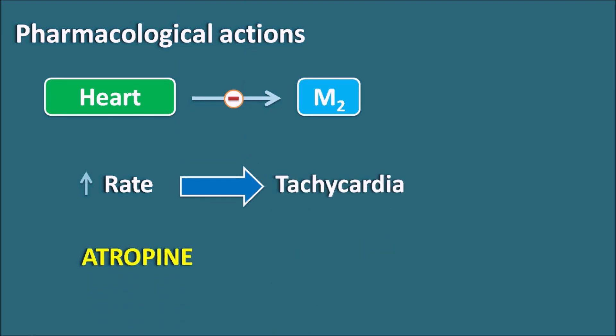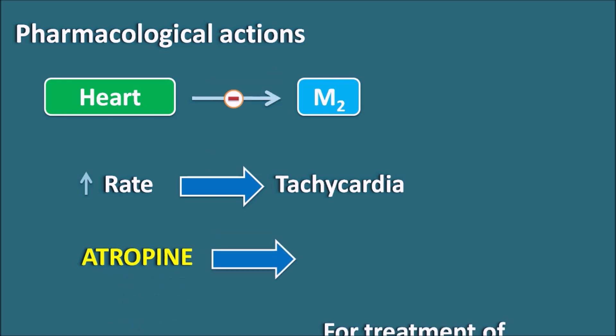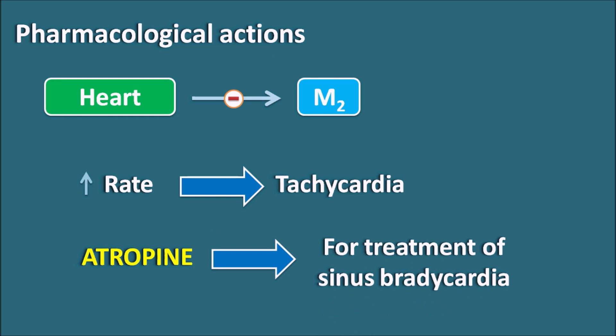Atropine is one drug which produces tachycardia, and since it produces tachycardia this drug can be used in the treatment of sinus bradycardia. We should not be confused — atropine produces tachycardia, that is why it is indicated for bradycardia.